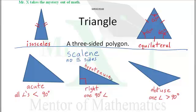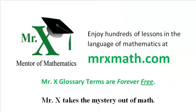The way they're drawn here, they could be scalene. Because if two sides are the same, it's isosceles. And if three sides are the same length, it's equilateral. Mr. X, Mentor of Mathematics at MrXMath.com.